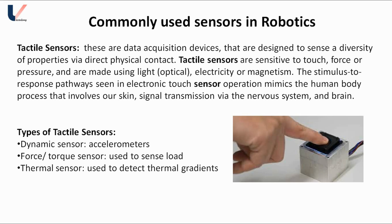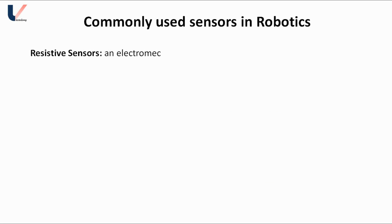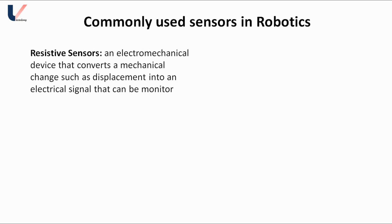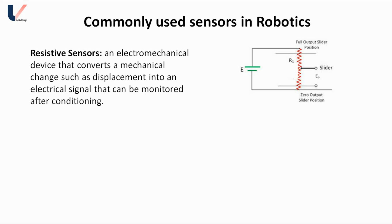The next sensor is the resistive sensor. A resistive sensor is an electromechanical device that converts a mechanical change, such as a displacement, into an electrical signal that can be monitored after conditioning. This circuit shows a very basic resistive sensor used to detect displacement of a part. We attach a slider to the part, and wherever there is a displacement, the slider moves and changes the current in the circuit due to the change in resistance. This change in current is used as a signal to measure the displacement.